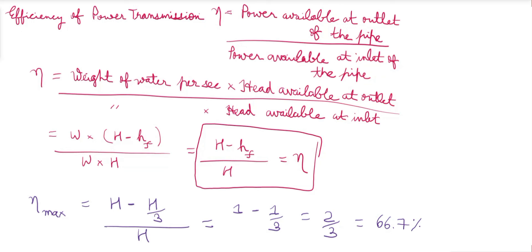So, we found the equation for power transmitted at the outlet of the pipe, the efficiency of power transmission, the condition for maximum transmission of power, and the maximum efficiency of power transmission. Thank you.